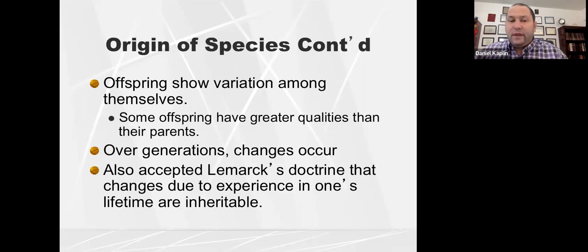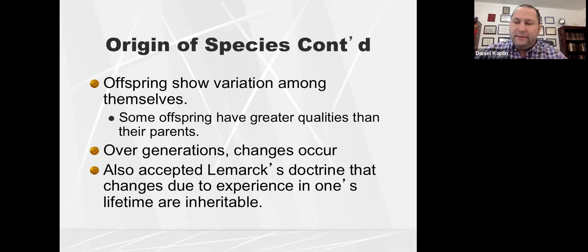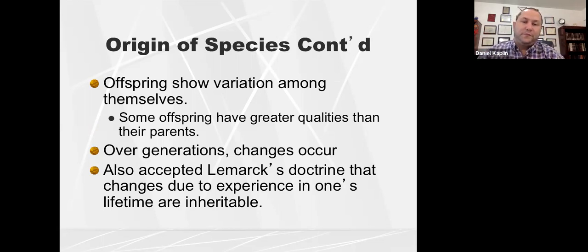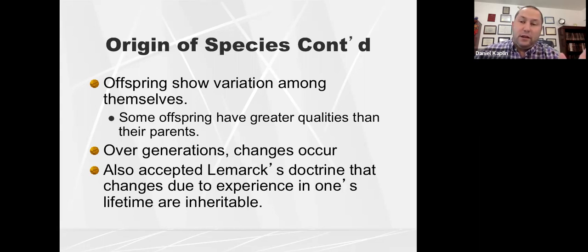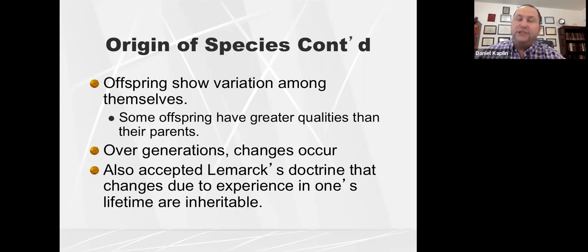Looking at offspring, we actually see that many times children have greater qualities than their parents — the ability to adapt and pass that on means children sometimes have better abilities to adapt. Over generations, changes occur to promote survival. In the early 1900s, life expectancy was about 40; now it's doubled to about 80. That's due to better healthcare, better nutrition, and some positive mutations. Over generations, changes have occurred.